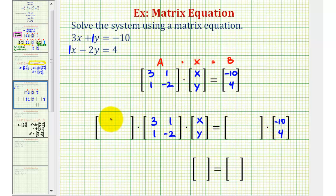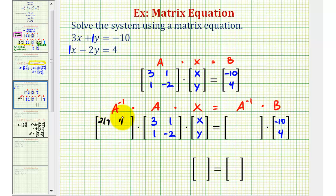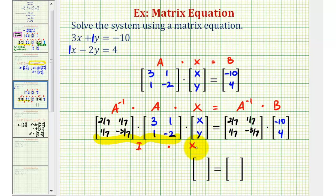Notice how we have the same matrix equation here, and now we're going to multiply both sides by A inverse. Remember, the order of matrix multiplication is important, so on the left side we're going to have A inverse times A times matrix X equals A inverse times B. At this point, we need to recognize that A inverse times A will be equal to a two by two identity matrix, so we'll have the identity matrix times matrix X equals A inverse times B. The identity matrix times X is going to equal just matrix X, so we'll have x, y here, which means the product of A inverse and B will give us the solution to our system.